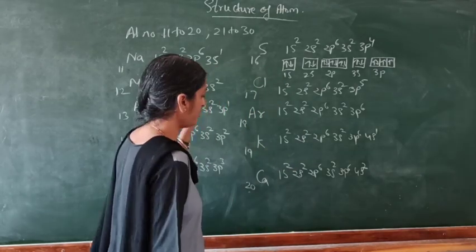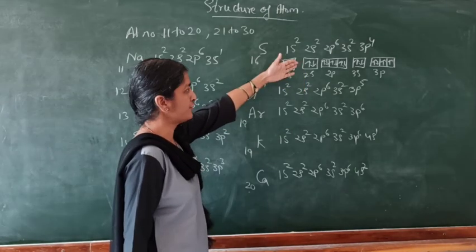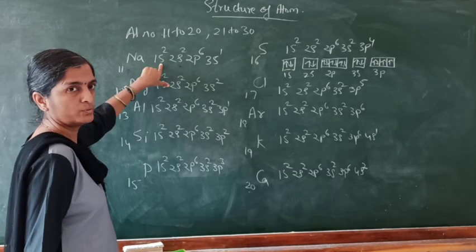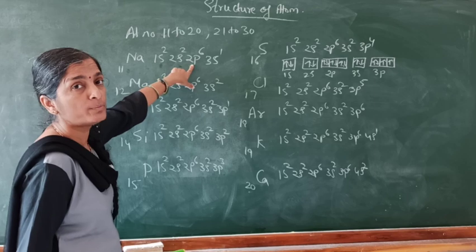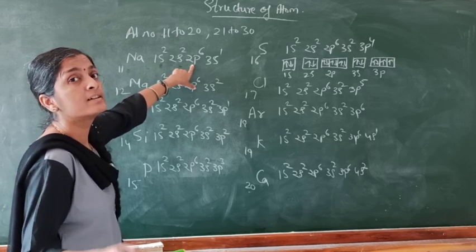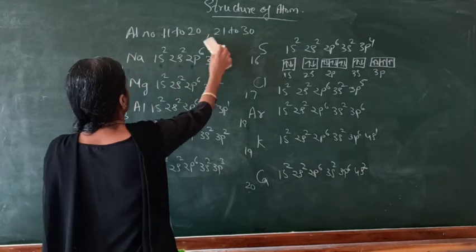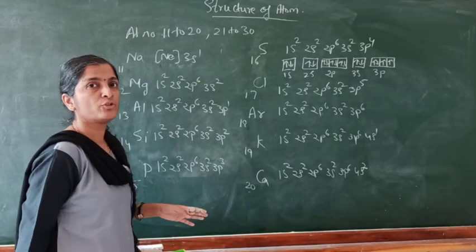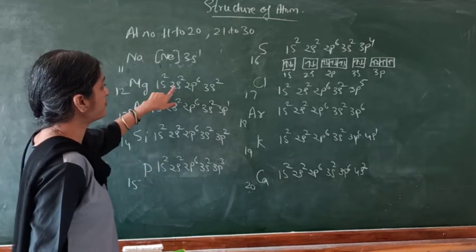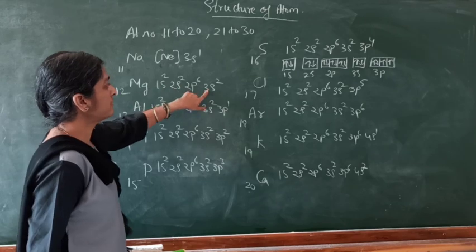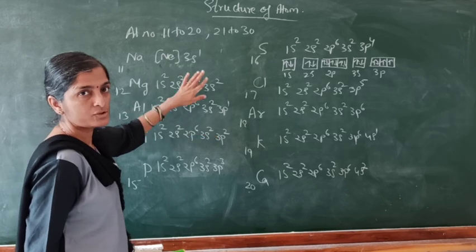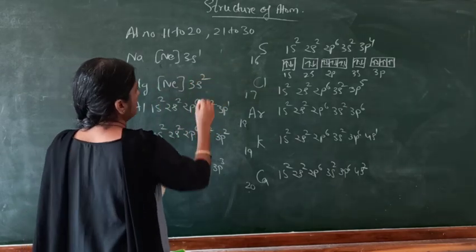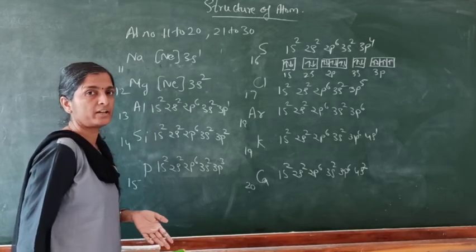This is the electronic configuration of elements up to atomic number 20. Just like I have shown you the other way of writing electronic configuration, you can do it for the other elements also. Now look here — 1s², 2s², 2p⁶ is the electronic configuration of the noble gas neon. So you can write sodium as [Ne] 3s¹, magnesium as [Ne] 3s², aluminium as [Ne] 3s², 3p¹. You can write the electronic configuration in terms of noble gases. This is also the other way of writing the electronic configuration.